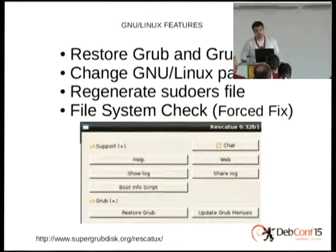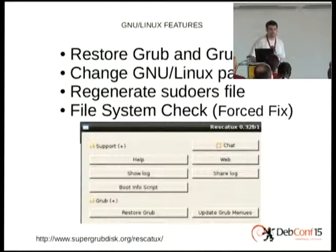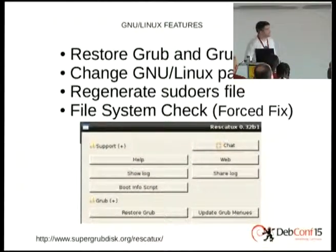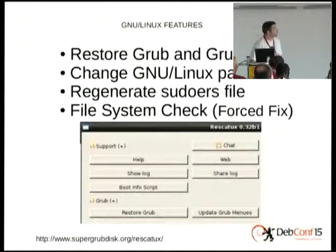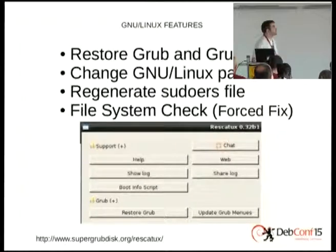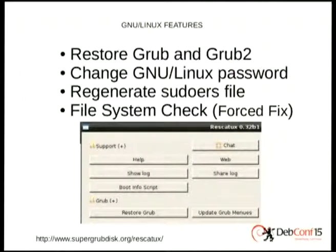In the Linux features section we have some examples: Restore Grub and Restore Grub version 2. We can change the Linux password so that when we forget it we can change it for another one, or when the old sysadmin leaves the company we can set a new one. If we're not good at editing the sudoers file, we can also regenerate it so that it works and then re-edit. And we can do a filesystem check — fsck.